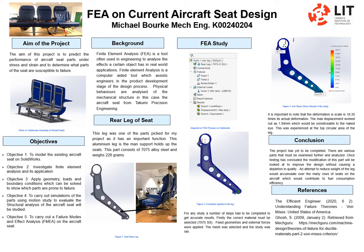Figure 3 shows Von Mises stress results of the study. It is important to note that the deformation scale is 18.35 times its actual deformation. The max displacement worked out as 1.94 mm, which would be unnoticeable to the naked eye, and was experienced at the top circle area of the leg.